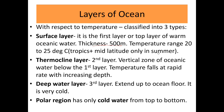The surface layer has a thickness of around 500 meters and temperature ranges between 20 to 25 degrees Celsius. This layer is seen in the tropics throughout the year, whereas in the mid-latitude region it can be seen only in the summer season. The thermocline layer is the second layer — a vertical zone of oceanic water below the first layer where temperature falls at a rapid rate with increasing depth. It is also called the transition zone.